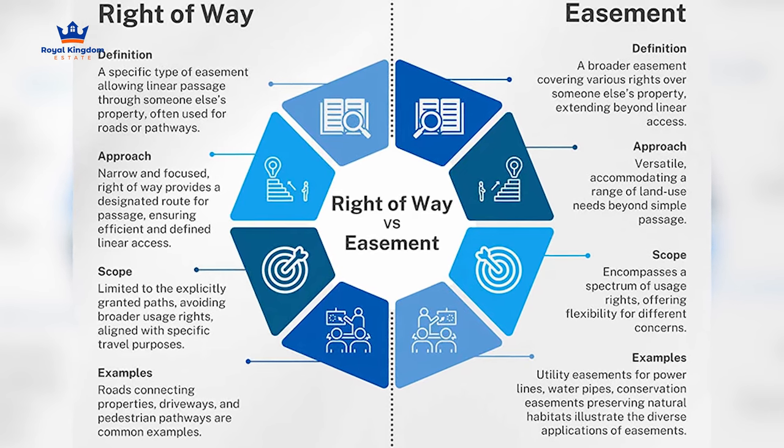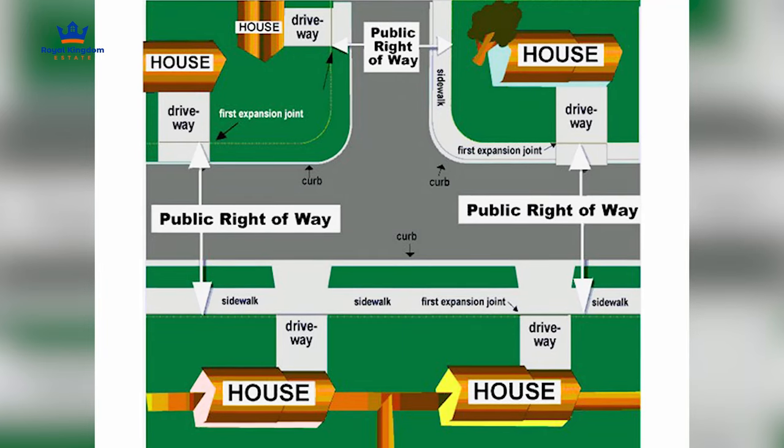Right of way, on the other hand, gives whoever holds it — whether government or an individual — the legal right to construct or create a specific route through your property. So if you have land with plans for residential use, and someone has the right of way, they can legally create a route through it, which would completely neutralize your plans. That is one of the key things everyone needs to look out for when anticipating these two phenomena.